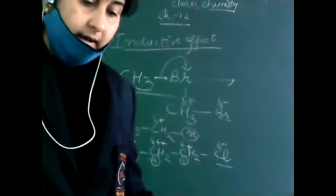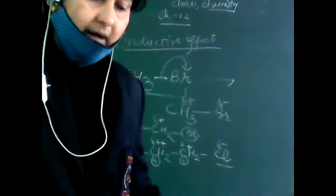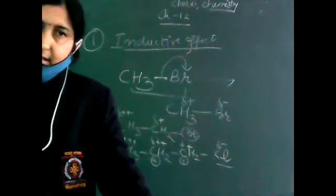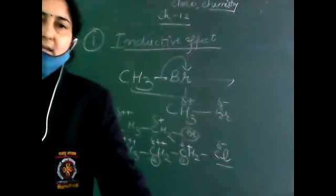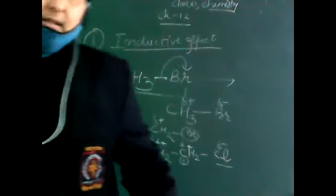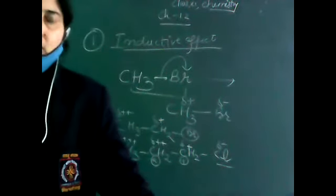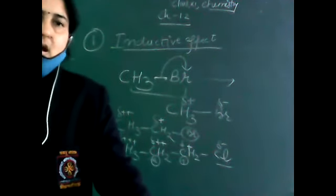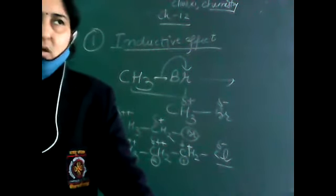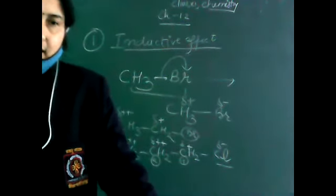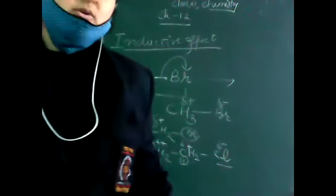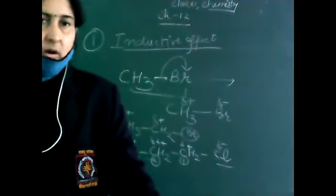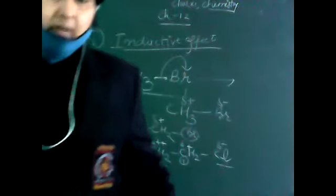This is our inductive effect, and it is of two types: plus and minus. In the plus inductive effect, electron-donating groups such as alkyl groups attach to the carbon chain. In the negative inductive effect, groups such as COOH, CN, and alkoxy groups attach to the carbon chain. So we get two types of inductive effect.